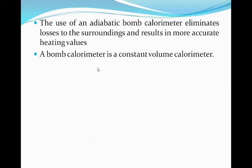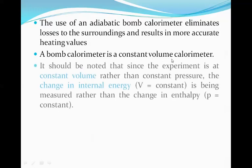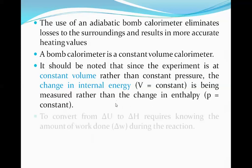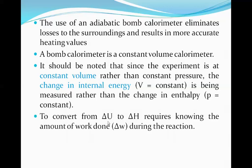When we are using a bomb calorimeter, since the system is totally closed, the bomb calorimeter is actually a constant volume calorimeter — an isochoric process is carried out. It should be noted that since the experiment is at constant volume rather than constant pressure, the change in internal energy (V = constant) is being measured rather than the change in enthalpy. To convert from change in internal energy to change in enthalpy, it requires knowing the amount of work done during the reaction.